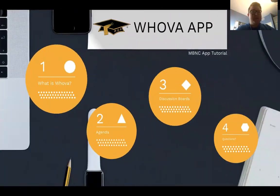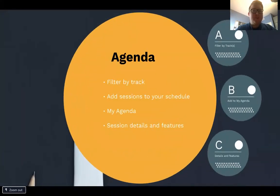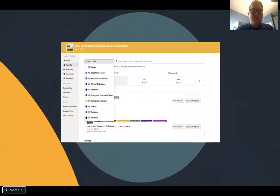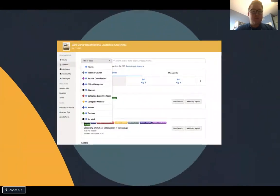Now that you've outfitted your profile to the max, how do you know which sessions to attend? Head on over to the agenda tab in the app to see. The agenda shows all of the sessions that will take place during the National Conference. However, not all of them apply to you. You can filter out the sessions you do not need by selecting your track, including official delegate, executive board member, alumni, advisor, etc.